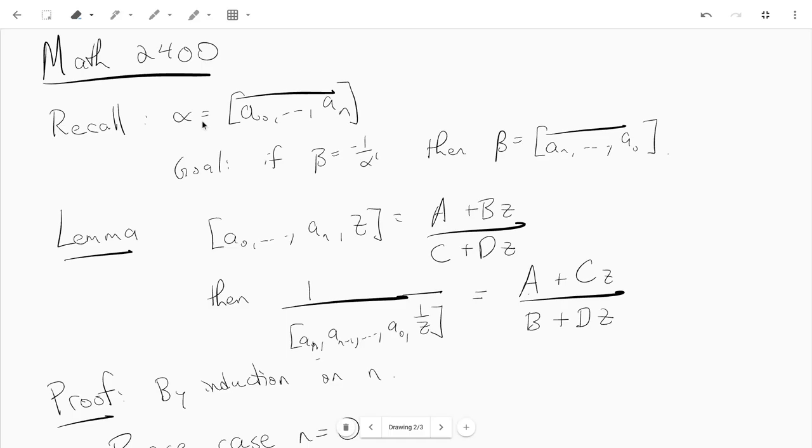So in this video we're not going to prove that, we're just going to prove the following lemma. In the next video we'll use this lemma as a tool to give us this characterization of these periodic continued fractions. The lemma says that when you start with the continued fraction, this nearly simple continued fraction a0 up to an followed by z, you write it as a plus bz over c plus dz.